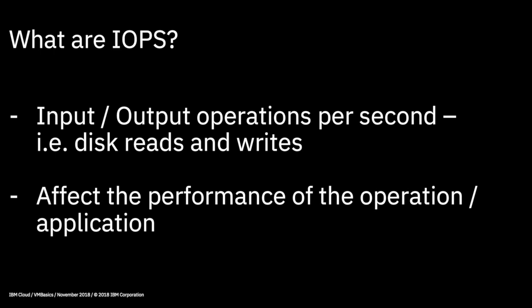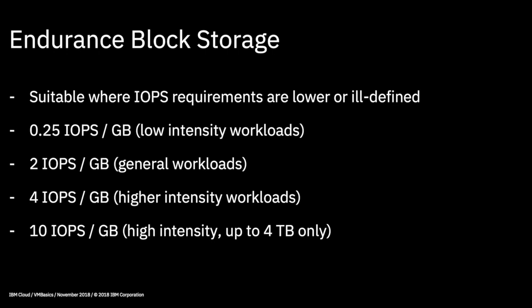There are two types of block storage — endurance and performance — and these offer different levels of IOPS. With endurance there are four different levels of IOPS, and endurance block storage is mostly suitable where the requirements for IOPS are ill-defined or where lower IOPS are required. With 0.25 IOPS per gigabyte you would expect pretty low levels of disk activity, and note that you can't migrate up from this tier. Two IOPS per gigabyte is good for general workloads such as small databases, and rising up to 10 IOPS per gigabyte may suit a larger database linked to a website, for example.